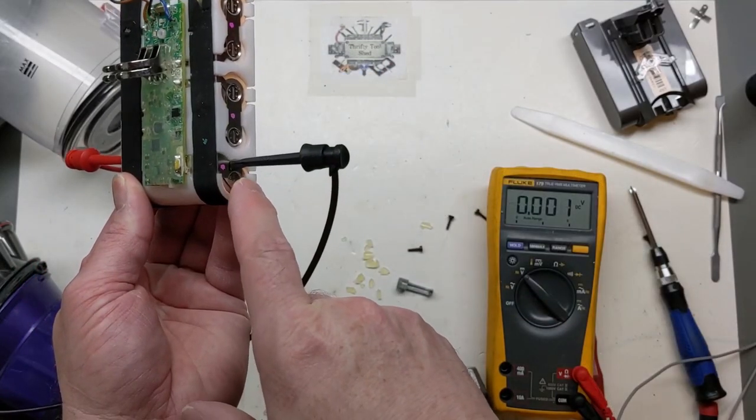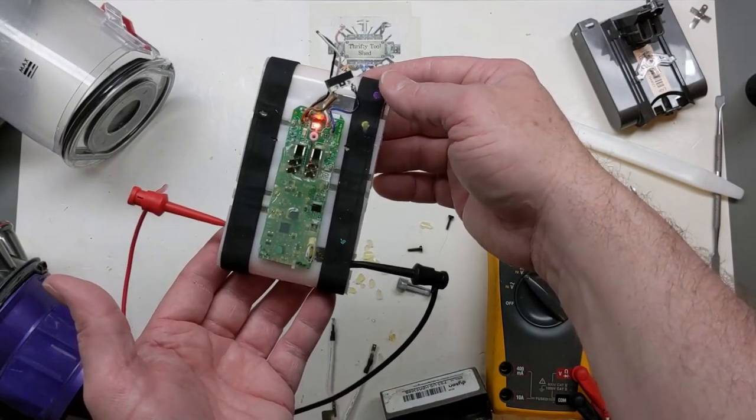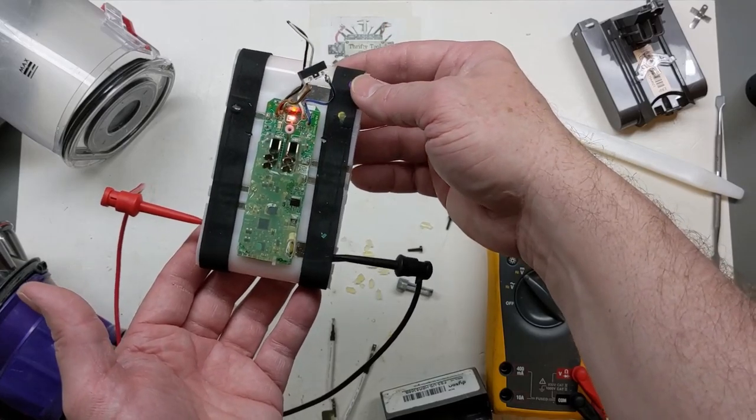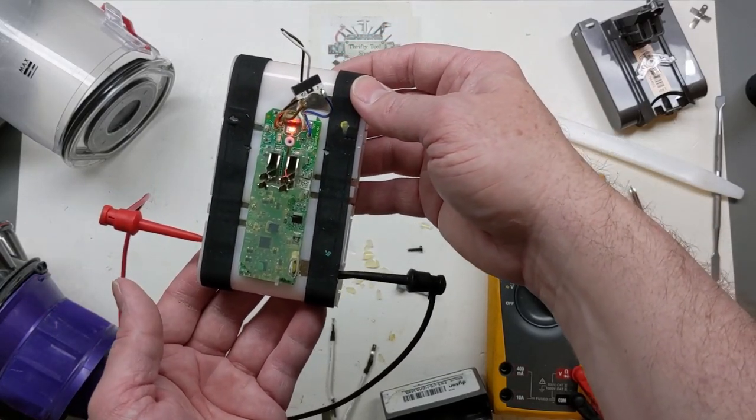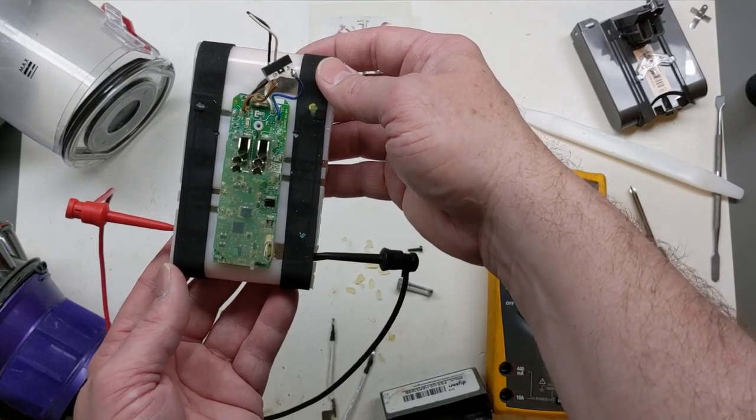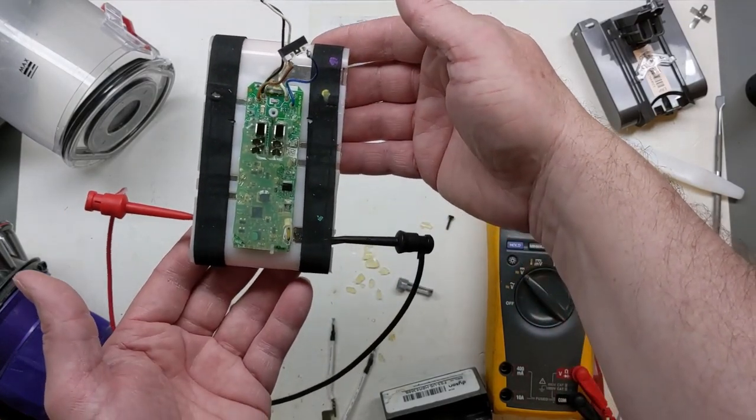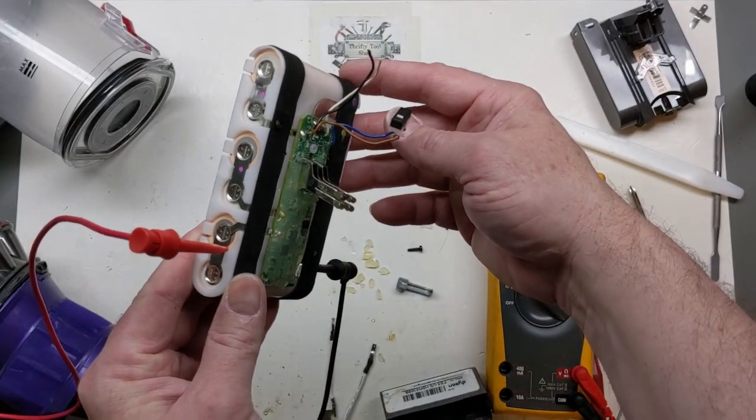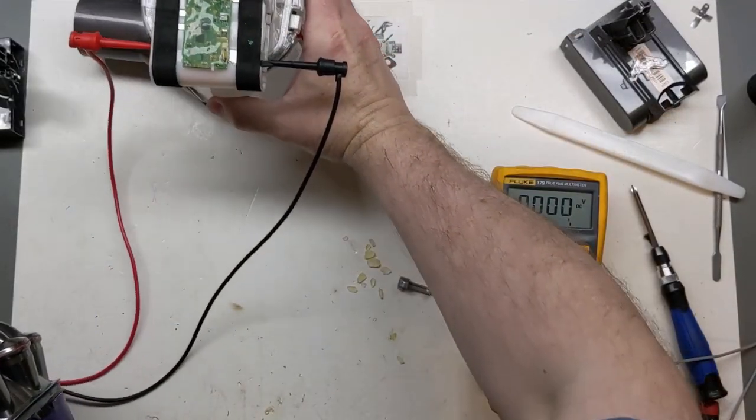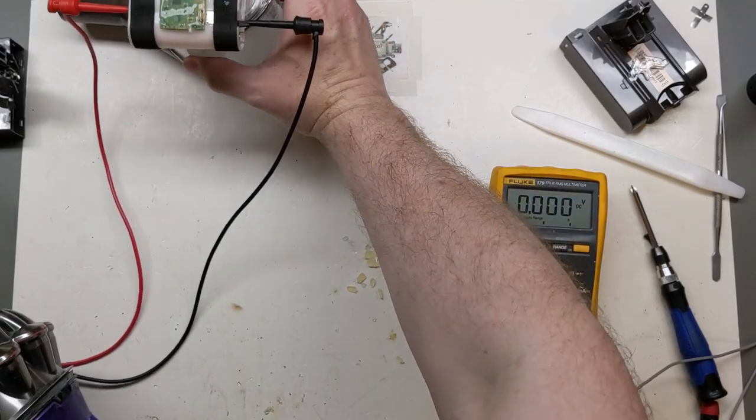Back now, just starting on my first cell. I'm just clipping across our tabs here. I have a 3.5 volt limit set on the CV of my supply and a little over an amp on the current, so I'm just going to let this run and we'll do the same thing to each of the six cells.